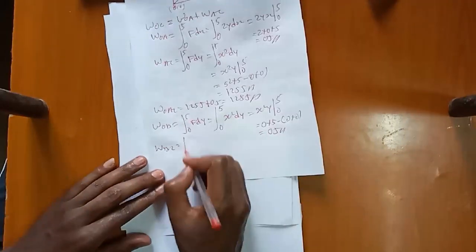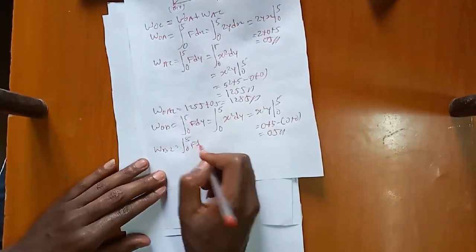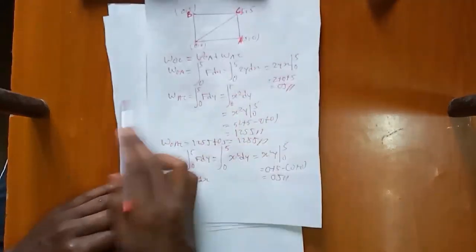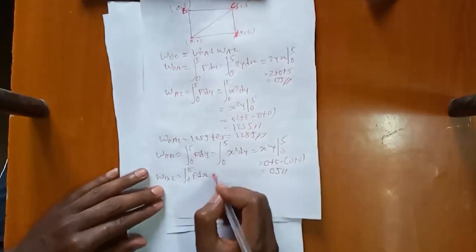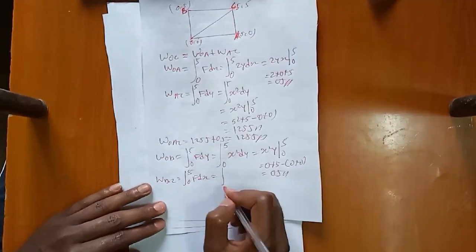To explain: for path OB, we compute the integral of 2y·dx, where the relevant component applies.